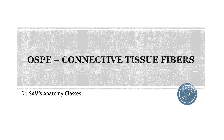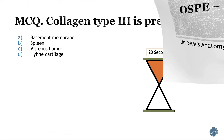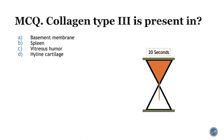If you are well versed with connective tissue and its fibers, you should be prepared to face an MCQ right now — and if not, I am here to explain the different types of connective fibers. You are getting 20 seconds to answer this: Collagen type 3 is present in basement membrane, spleen, vitreous humor, or hyaline cartilage? The answer is spleen.